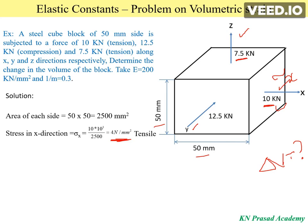Similarly, we determine the stress in the y direction, σy. We are applying a compressive load of 12.5 kN. Dividing by the cross-sectional area of 2500 mm² gives σy = 5 N/mm². Since the nature is compressive, we consider it as negative. We always take positive values for tensile and negative values for compressive stress.